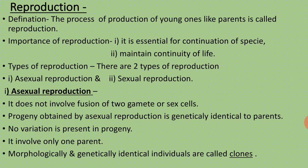Asexual reproduction is also called uniparental — 'uni' means one parent. Morphologically and genetically identical individuals are called clones. The progeny obtained by asexual reproduction is called a clone, because structurally and genetically it is 100% similar to the parents.